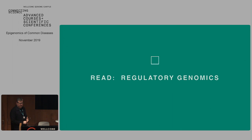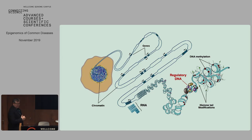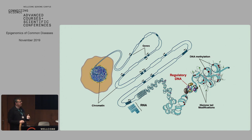On the read side in regulatory genomics, I'm going to focus principally on genomic footprinting, which essentially is a nucleotide resolution window on gene regulation. Everybody is familiar with the concept that the genome is packaged into chromatin. Aside from the nucleosomes, I'm going to be focusing on these regions which I'm generically going to call regulatory DNA. These are relatively short — a couple hundred base pair sequence elements in the genome — which encode recognition sites for transcription factors.